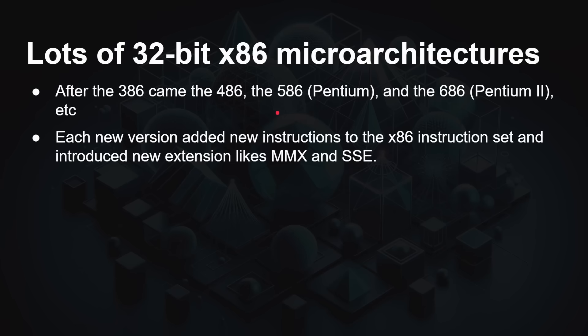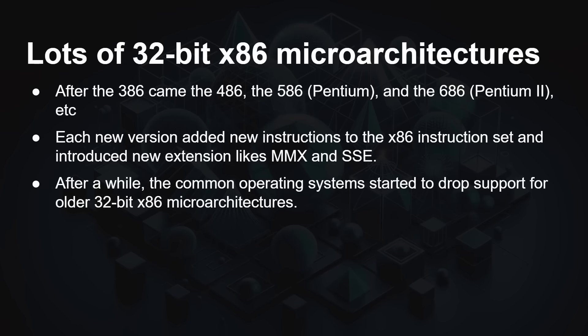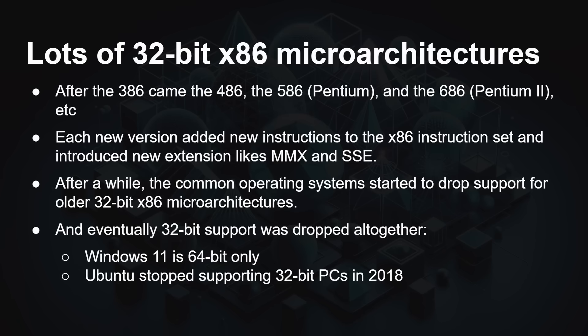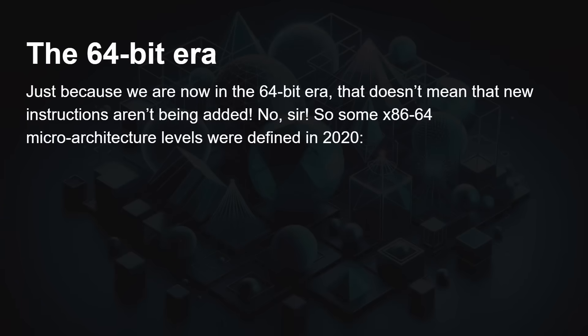Each new version added more instructions to the x86 instruction set and introduced new extensions like MMX and SSE. After a while, common operating systems started to drop support for 32-bit x86 completely, and we moved into the 64-bit era. Windows 11 is 64-bit only. Ubuntu stopped supporting 32-bit PCs in 2018. Mac OS went fully 64-bit in 2011, and so on.